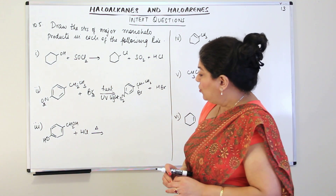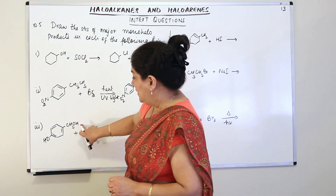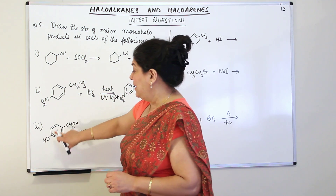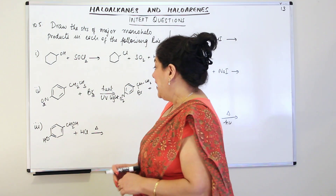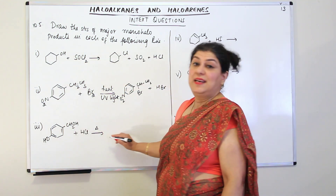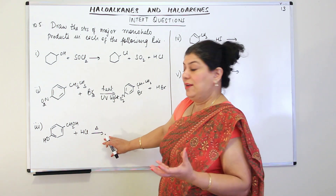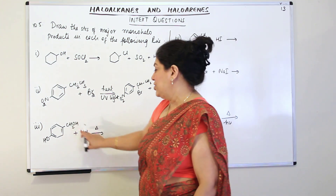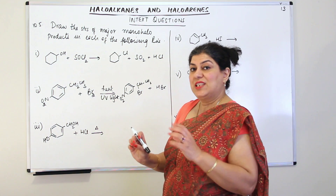In the next question you have a benzene ring with a CH₂OH group — that is, methyl alcohol attached to a phenol. There is an alcoholic OH here and a phenolic OH on the benzene ring. It reacts with HCl and heat. We know when alcohols are heated with a halogen acid, it results in substitution of the OH group by the halogen atom. This question is designed to confuse you because there are two OH groups.